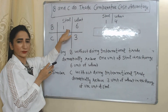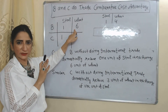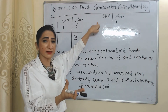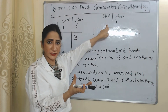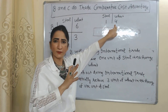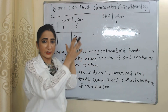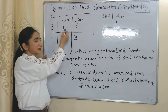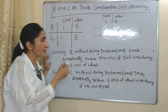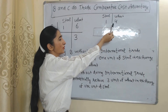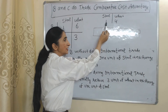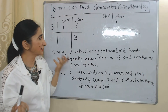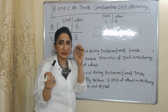When country B does international trade, it receives one unit of steel in exchange for only four units of wheat. Domestically, country B has to give up six units of wheat for one unit of steel, but at the international level, country B has to give up only four units of wheat for one unit of steel. So at international trade, country B is getting a benefit of two units of wheat, and this is called the gain from trade of country B.